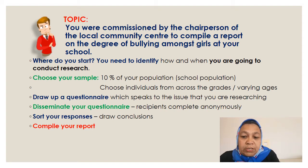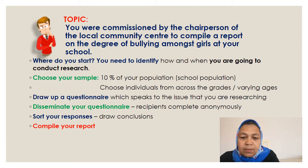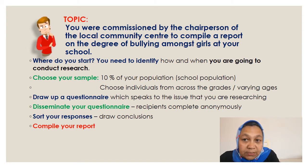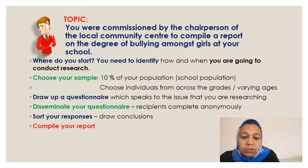What you do next is draw up your questionnaire — a list of questions which must speak to the issue that you are researching. You then disseminate or hand out your questionnaire to the recipients who will complete it. You can decide if they complete it anonymously or with their names included. You then sort out your responses and based on those responses, you draw your conclusions and compile your report.